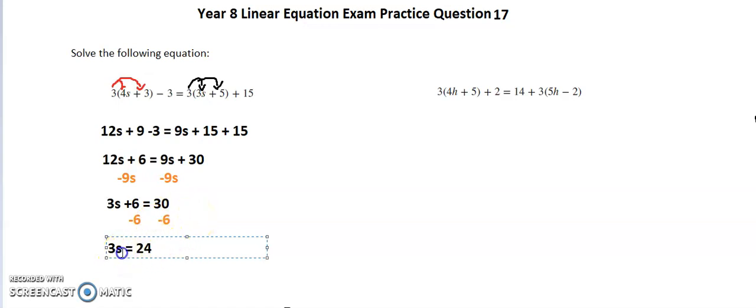I need to divide my 3s and my 24 by 3 because I need to get s by itself, and the opposite of times is divide. That gives me the value for s, which is 24 divided by 3 is 8, so s is worth 8.